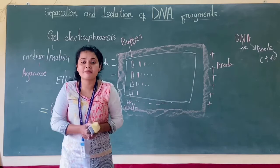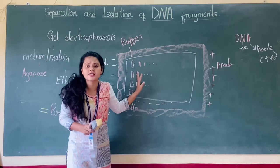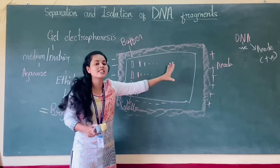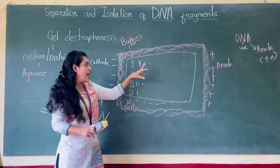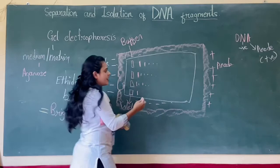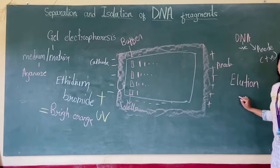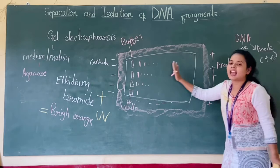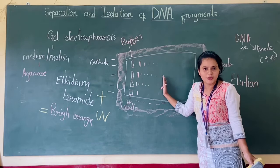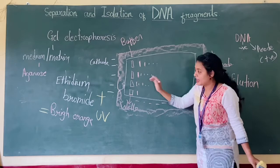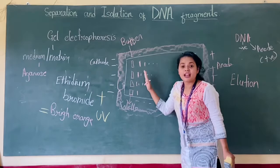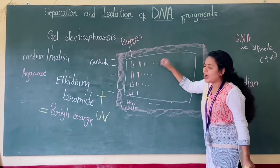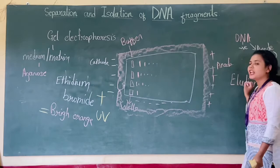Like that, DNA fragments can be separated. Whichever fragment I want — for example, if this is my gene of interest — I can easily remove it. Removal of the DNA fragment from the agarose gel plate is referred to as elution. Elution is the removal of the DNA fragment I want. This is the entire process of gel electrophoresis. Gel is the agarose gel, and electrophoresis simply means electrical charges are applied to that. DNA fragments are separated based on their size, and I can isolate whatever DNA fragment I want by a process called elution.